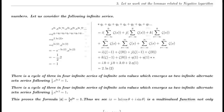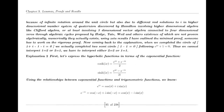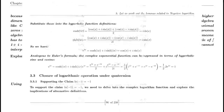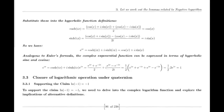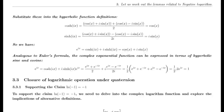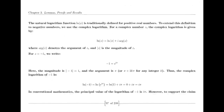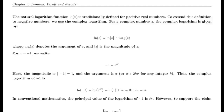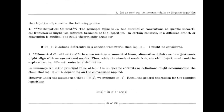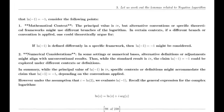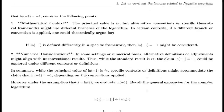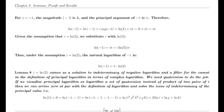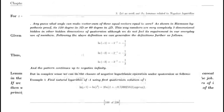You might have heard the story of the young Carl Friedrich Gauss who, when asked to sum the first 100 numbers, gave the correct answer in just seconds. This boy went on to come up with the prime number theorem, which describes the asymptotic distribution of prime numbers and was a major milestone in number theory. Gauss's work laid the groundwork for many important mathematical discoveries, including the Riemann Hypothesis.